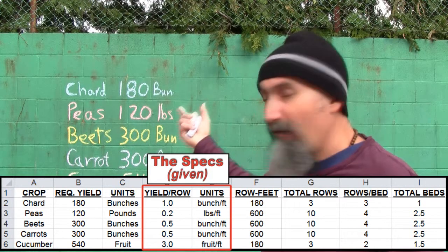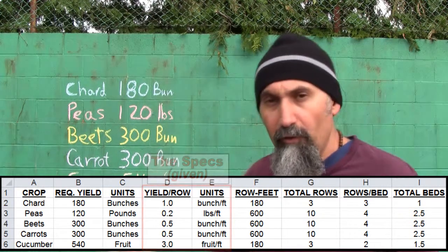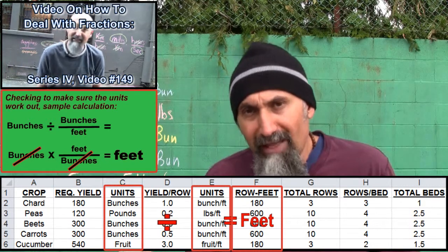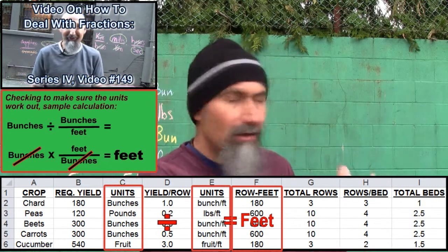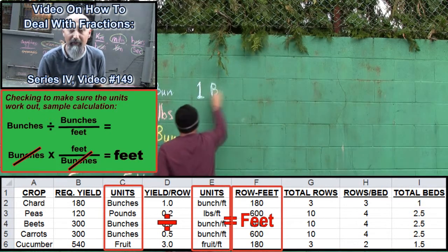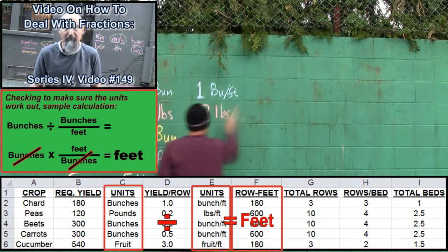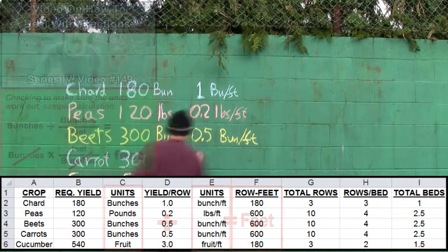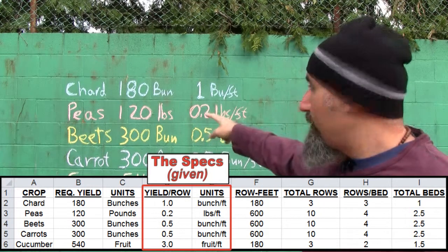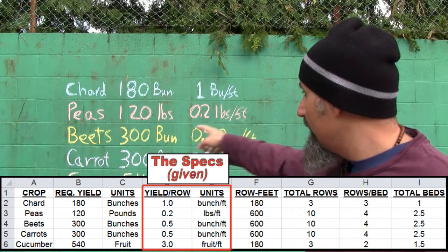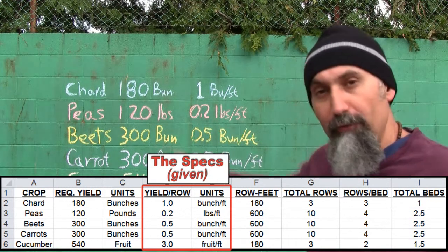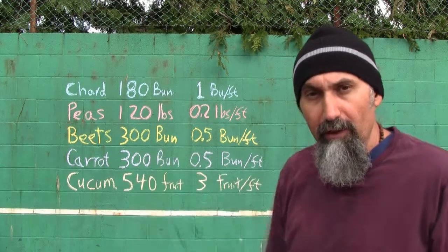We divide the total yield we're looking for by the expected yield per foot, and that gives us the total row feet we need. The expected yield per crop is: one bunch of chard per foot, 0.2 pounds of peas per foot, 0.5 bunches of beets per foot, 0.5 bunches of carrots per foot, and three fruit per foot for cucumbers.